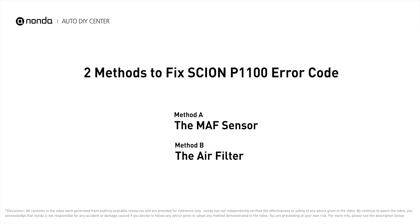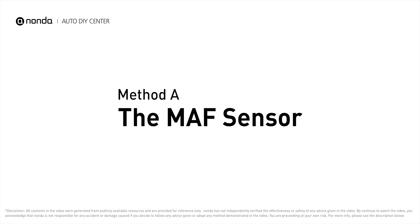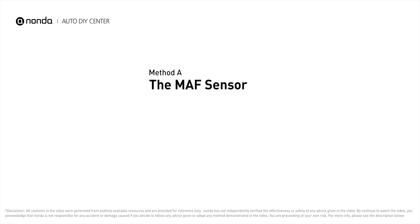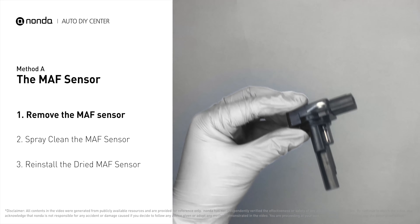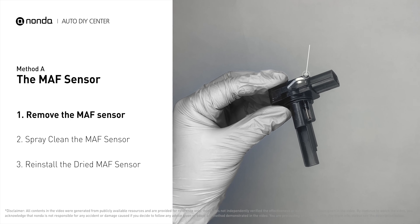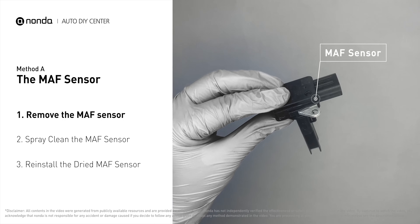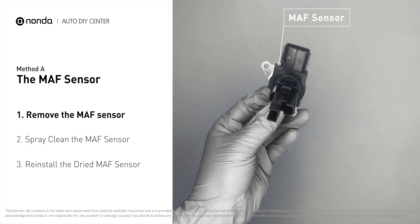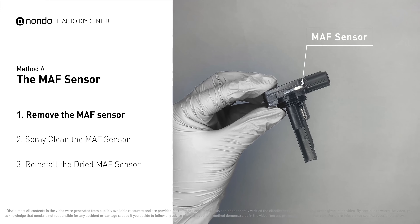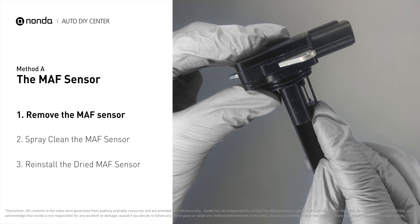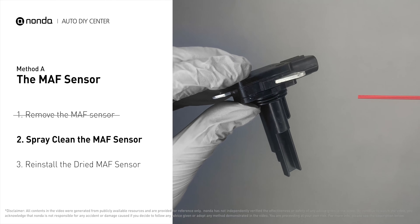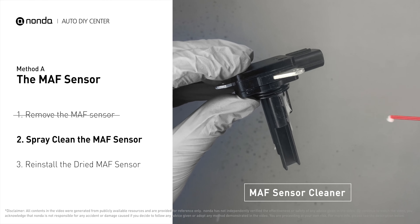Method A: MAF sensor. Carefully remove the MAF sensor from your car and do a quick inspection. The wire inside often gets dirty and needs to be cleaned. You can spray the MAF sensor cleaner onto the wire.